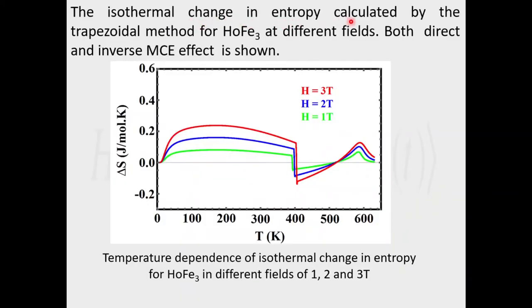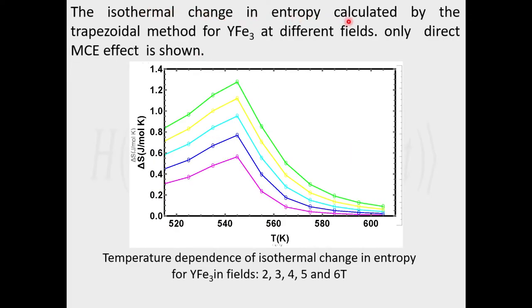The results of change in entropy. The isothermal change in entropy, calculated by the trapezoidal method for holmium iron-3 at different fields, shows both direct and inverse magnetocaloric effect. The isothermal change in entropy for yttrium iron-3 at different fields shows only a direct magnetocaloric effect.